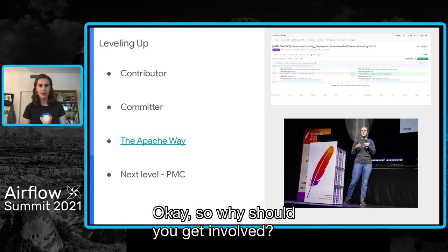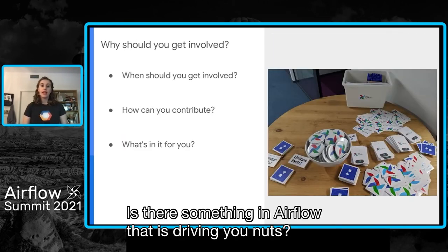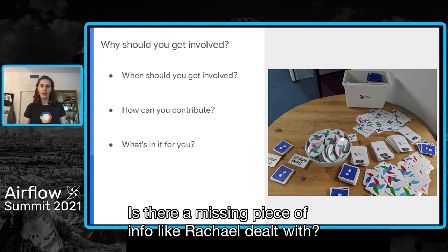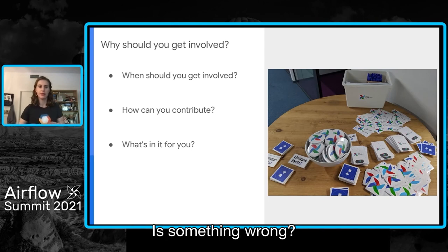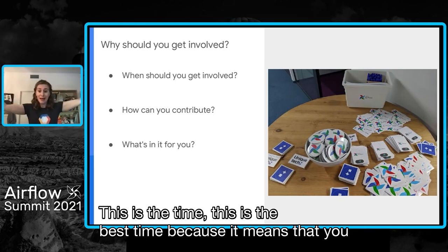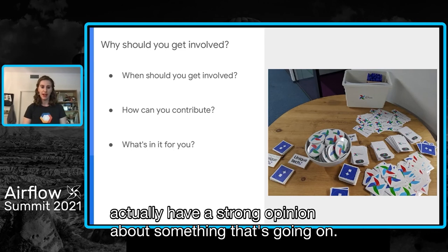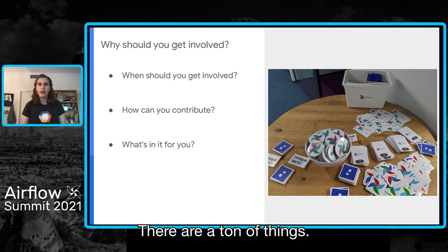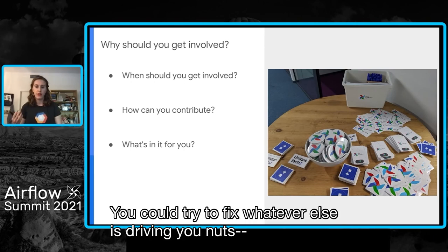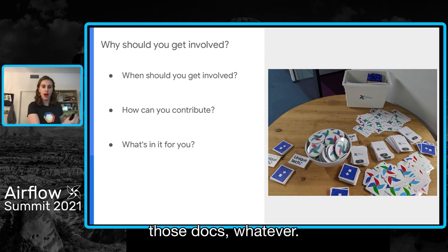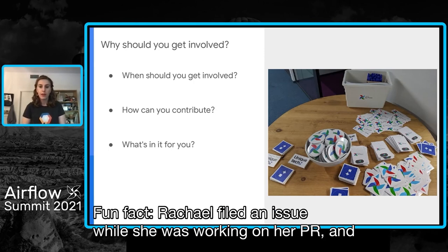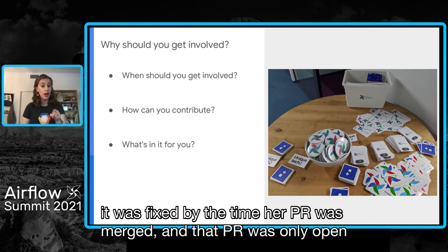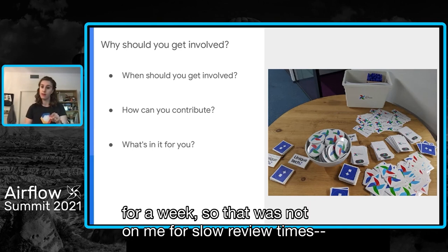Now I'm going to try to convince you why you should make your first contribution — or second or third. When should you do it? Is there something in Airflow that is driving you nuts? Is there a missing piece of info like Rachel dealt with — a lack of examples or documentation? Is there a bug? This is the time, because it means you have a strong opinion about something that's going on. You could fix that code inefficiency, fix whatever else is driving you nuts, or file an issue. Fun fact: Rachel filed an issue while working on her PR and it was fixed by the time her PR was merged — and that PR was only open for a week, so that was not on me for slow review times. At least not this time.